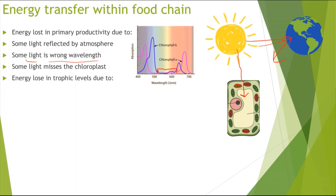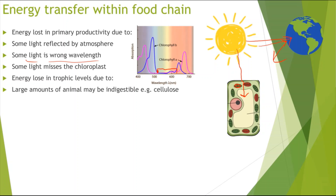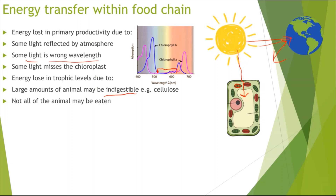Energy is also lost between trophic levels. When moving from primary to secondary consumer, or secondary to tertiary, large amounts of the animal or plant may be indigestible — for example, cellulose in plant cell walls cannot be digested by us because we lack the enzymes. Also, not all of the animal may be eaten; in the wild, if an animal is full it may leave the carcass to decompose, and that energy is not transferred to the next trophic level.